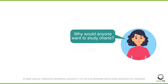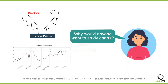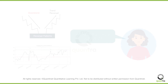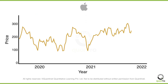But why would anyone want to study such complicated charts in the first place, and what is the intent behind marking anything at all in these charts? Assume that for the stock Apple, over the course of the past two years, you have observed that each time the price of Apple dropped to $100, it always ended up closing positive on the very next day by at least 10%. This same pattern consistently repeated itself over and over for the past five times.